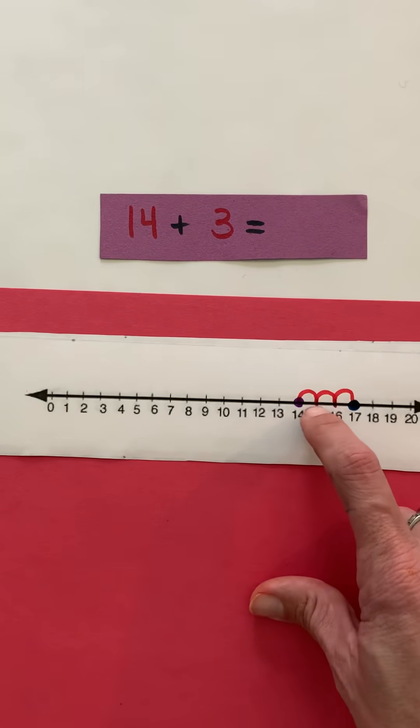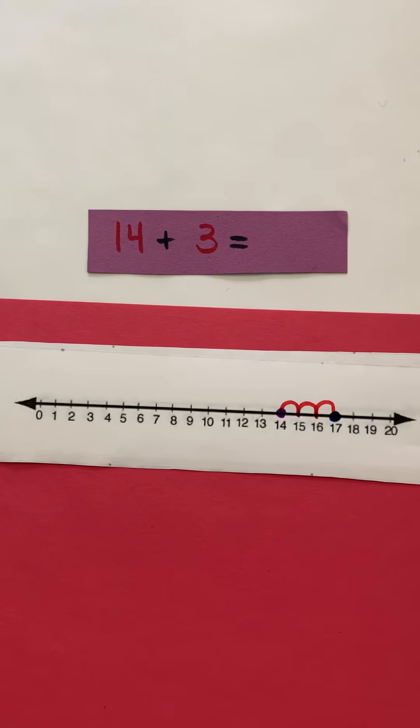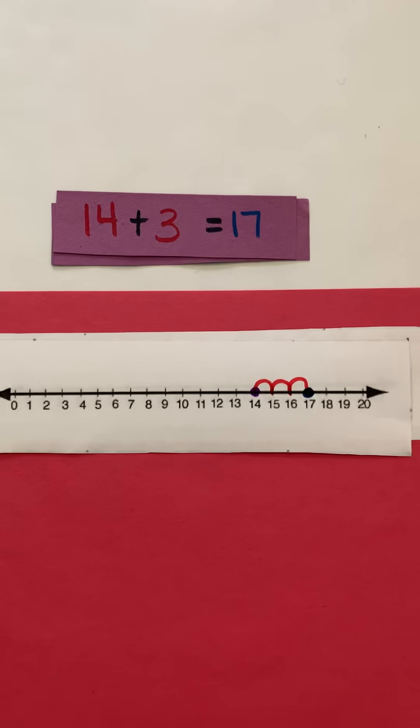So you can see I jumped one, two, three, and you can see that my sum is 17. So 14 plus 3 is 17.